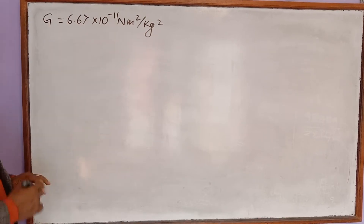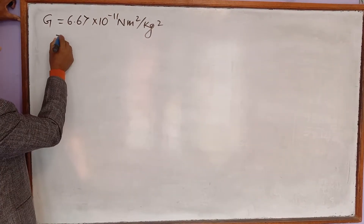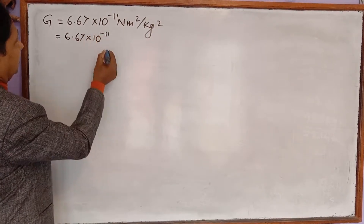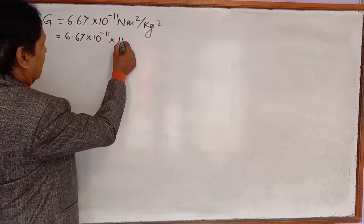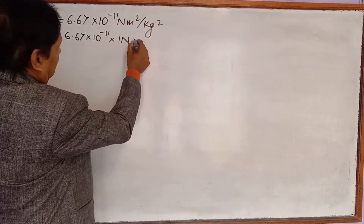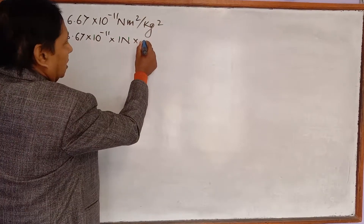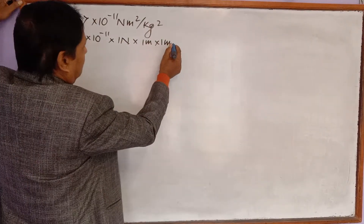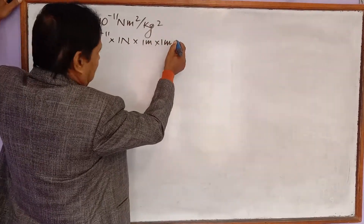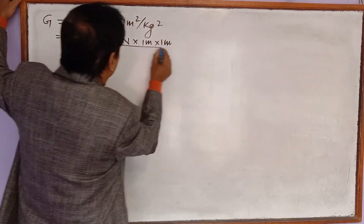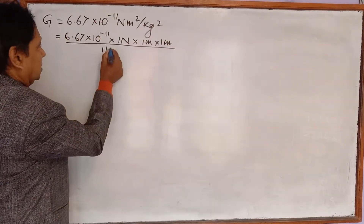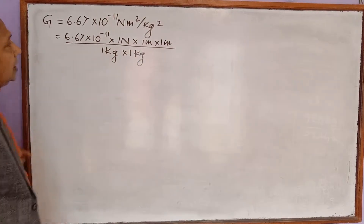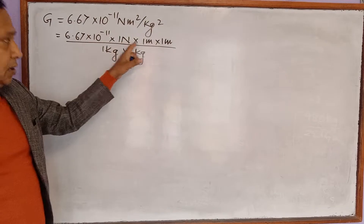For this, what I am going to do is write 6.67 into 10 to the power minus 11. If there is nothing but Newton, I write one Newton; if there is nothing but meter square, I write one meter into one meter; and in the denominator we have kilogram square, meaning one kilogram into one kilogram. Now I want to convert each of these units into the CGS system.